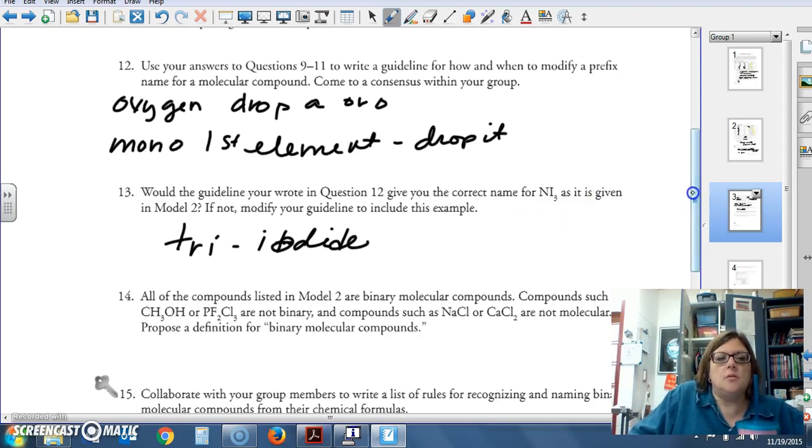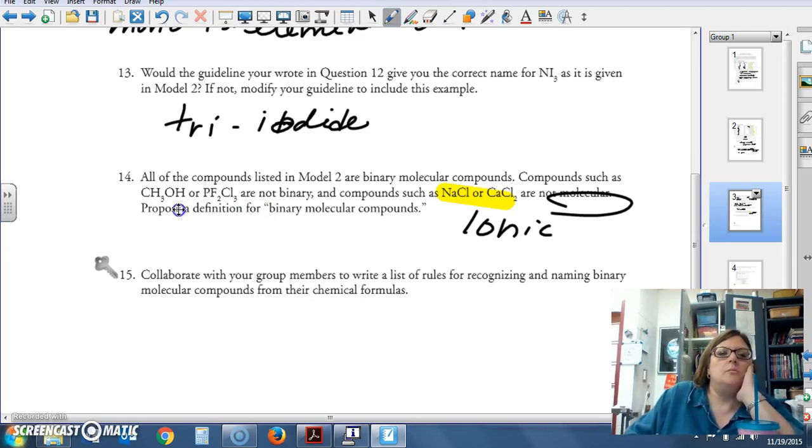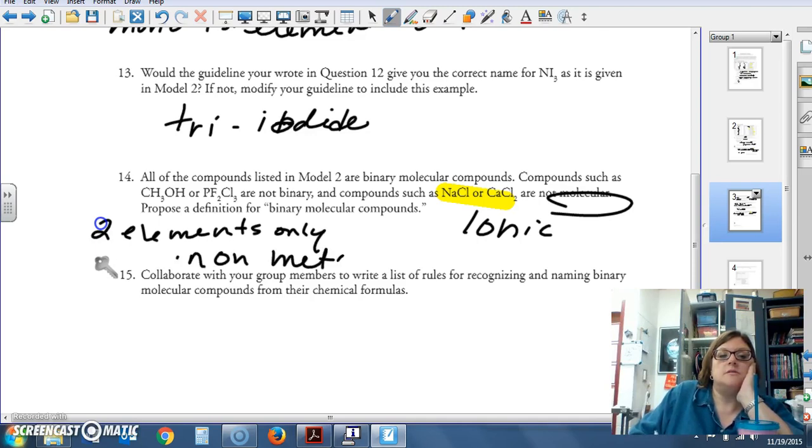All the compounds listed in model two are binary compounds. Compounds such as CH3OH or PF2Cl3 are not binary. And compounds such as NaCl and CaCl2 are not molecular. What does that mean? They're not molecular. That's right. They're ionic. Right here. Those guys. Propose a definition for binary molecular compounds. Hopefully, you're sitting there going, okay, well, they're made of two elements only. And both of those elements are non-metals.